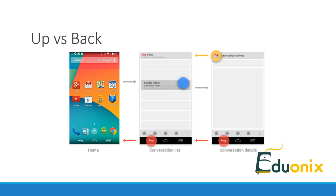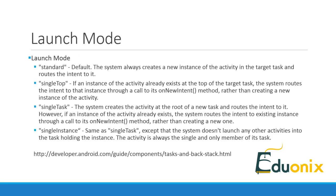The standard launch mode is the default launch mode. The system will always create a new instance of the activity in the target task and then route the intent to it. In the single-top launch mode, if an instance of the activity already exists at the top of the target task, the system routes the intent to that instance through a call to its onNewIntent method, rather than creating a new instance of the activity.